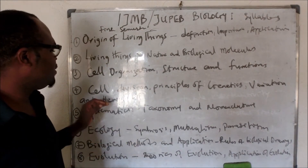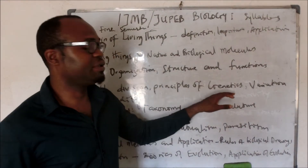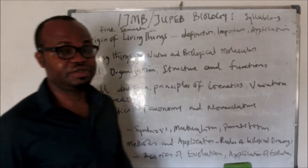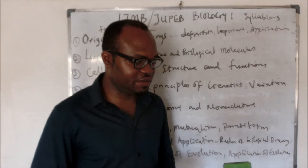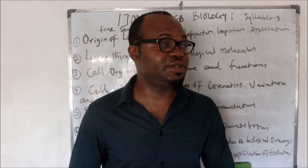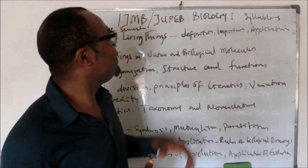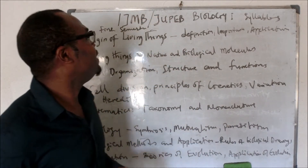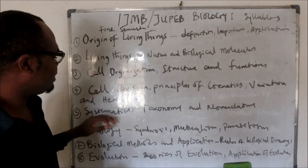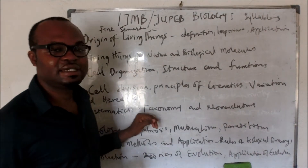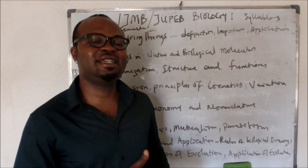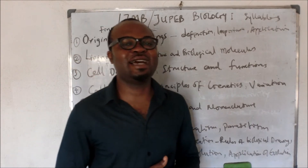We are going to be looking at cell division, principles of genetics, variation, and heredity. We have already done all of this in our normal biology, but we are going to be doing it extensively in engineering biology for IGNB and Jubeb. Then we are going to be looking at taxonomy and nomenclature, where we are going to be learning how living things are named.